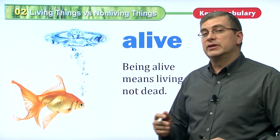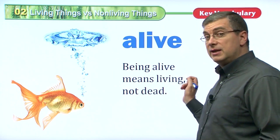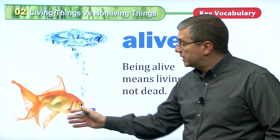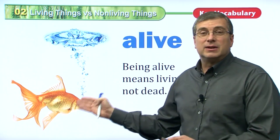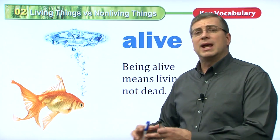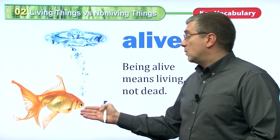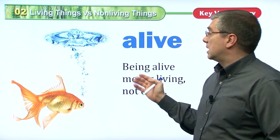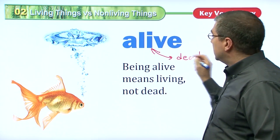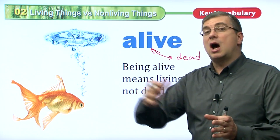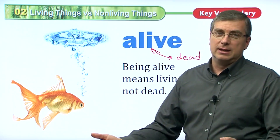We also have the word 'alive.' Being alive means to be living, not dead. Here we see this fish — it's moving around, it's breathing, so it is alive. But this fish will grow older; it has a cycle of life. All living things have a cycle of life. Someday this fish will die and will no longer be alive. So 'alive' is the opposite of 'dead.'